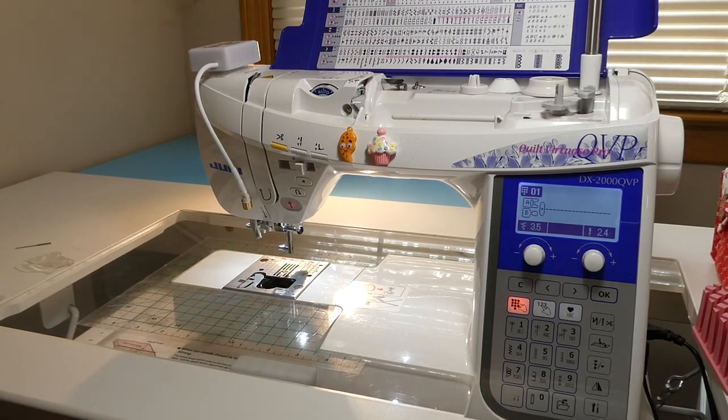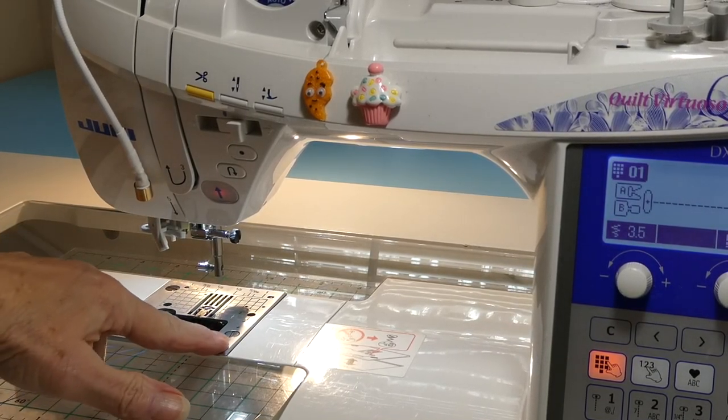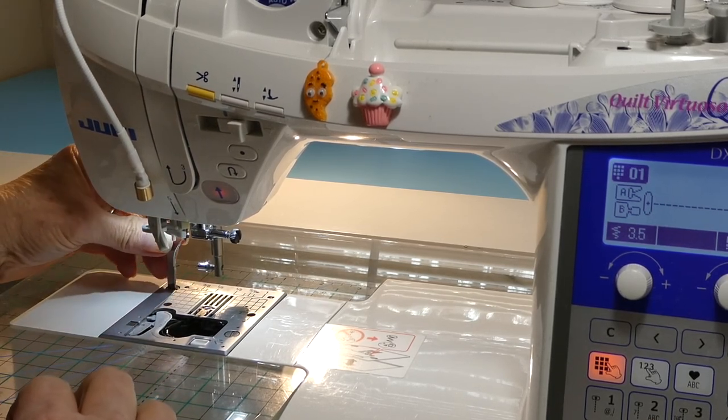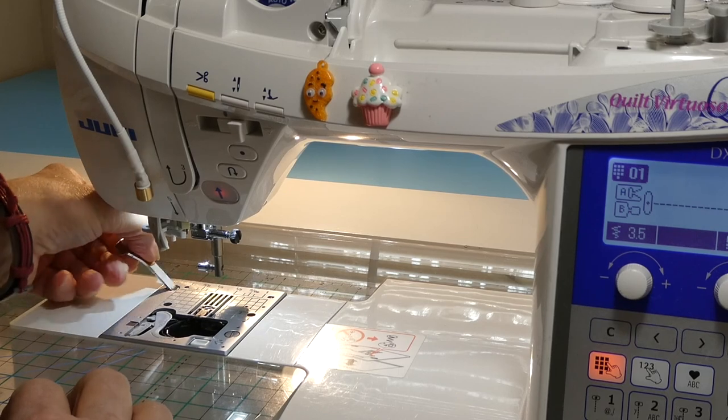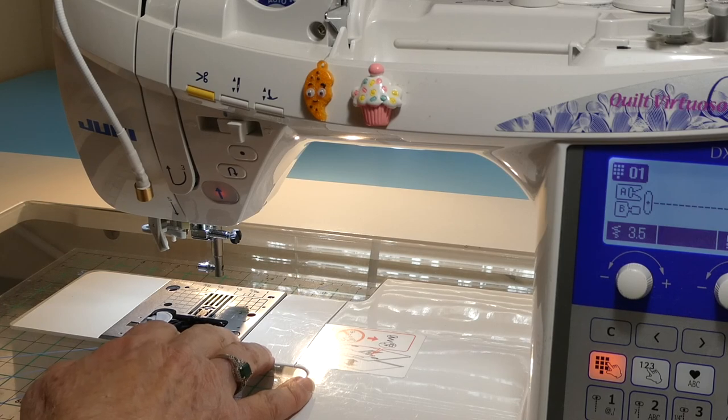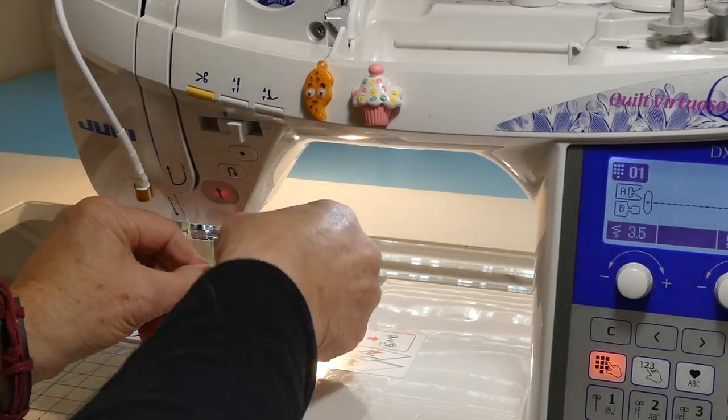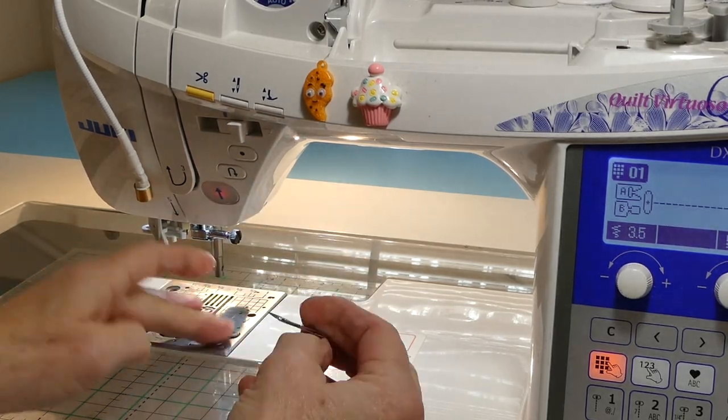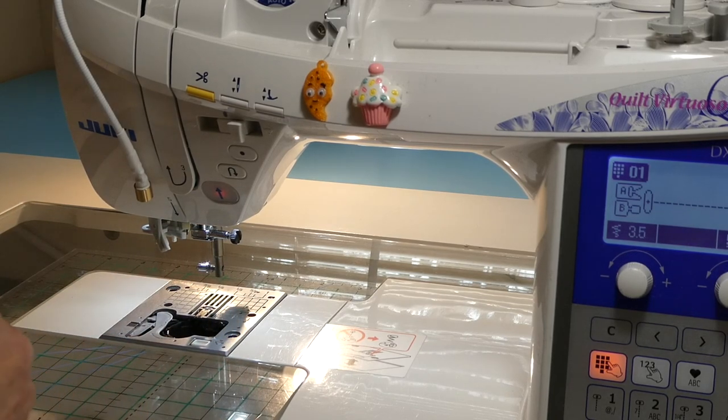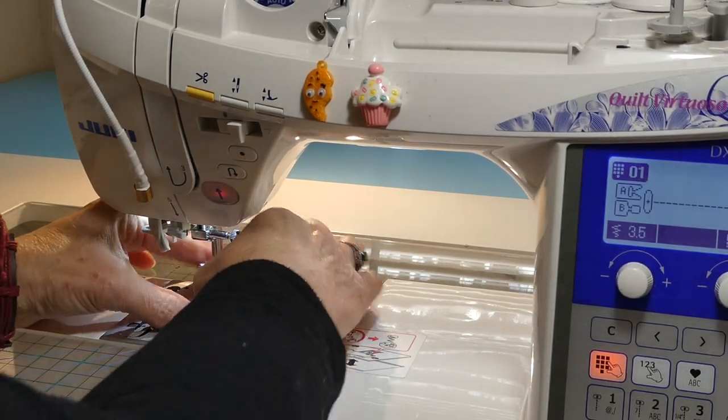Now for my machine, it has screws that hold my plate in. And they are right here and right here. And so I am simply going to unscrew them. And that way I can remove my foot plate. Don't lose your screws. Once you get it started, you can just spin it with your fingers. Make sure your foot is up. And then remove your plate.